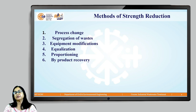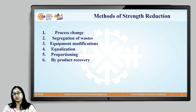There are various methods of strength reduction which include process change, segregation of waste, equipment modification, equalization, proportioning, and by-product recovery.